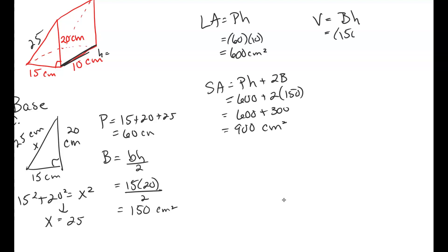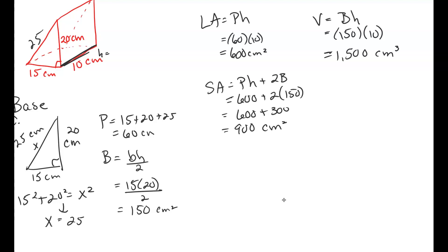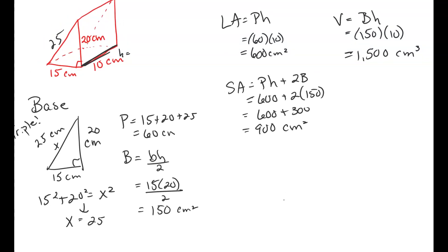And then we have volume, which is just the area of the base times the height. Well, the area of the base is 150. The height of the prism is 10, and that's going to give us 1,500 cubic centimeters. So the key thing with the prisms, remember, is always to draw your base, solving for the perimeter and the area of the bases. Okay.